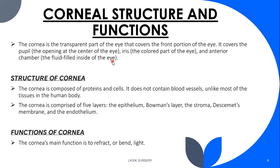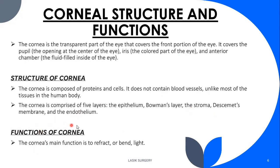Coming to our specific topic: cornea structure and function. The cornea is basically a transparent part of the eye that covers the front portion, covering the pupil at the center of the eye, the iris, and the anterior chamber. The anterior chamber is the fluid-filled inside of the eye. The cornea is composed of proteins and cells. It doesn't contain blood vessels, unlike most tissues in the human body. The cornea is comprised of five layers: the epithelium, Bowman's layer, the stroma, Descemet's membrane, and the endothelium.